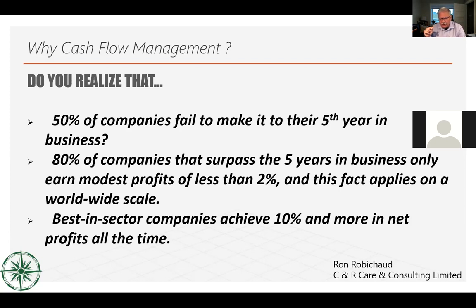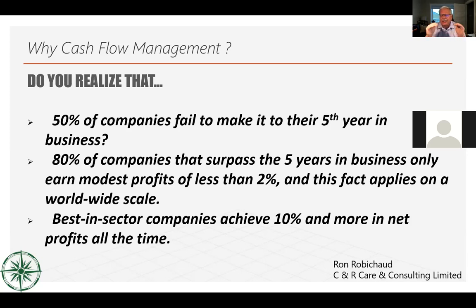98% of Canadian businesses have less than 100 employees. Yet Industry Canada's definition of a small business is fewer than 500 employees — we're missing the boat if policies are made for large corporations. In Canada, 85,000 to 90,000 businesses open every year and 85,000 to 90,000 close every year. The number of businesses has not really increased as a percentage of population in the last 35 years.